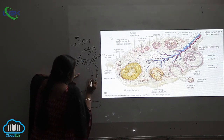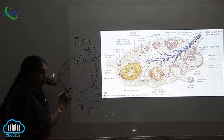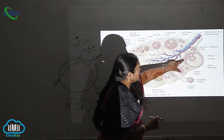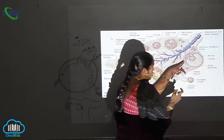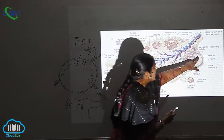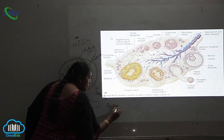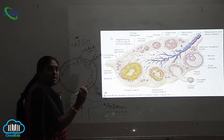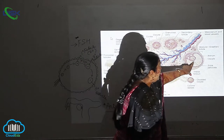The secondary follicle then develops into the tertiary follicle inside the ovary. The secondary follicle immediately changes into the tertiary follicle. Inside the tertiary follicle you can see a completely white-colored space called the antrum, which provides nourishment to the egg.